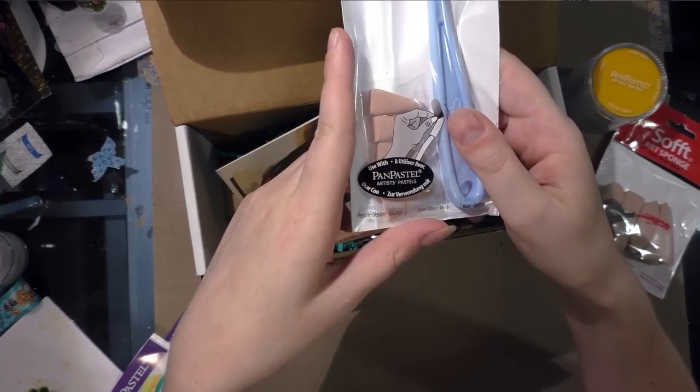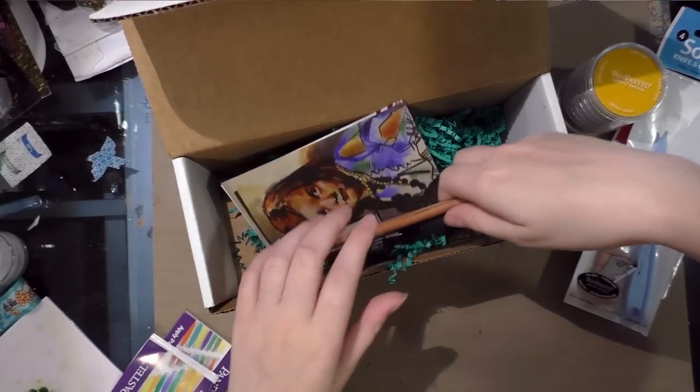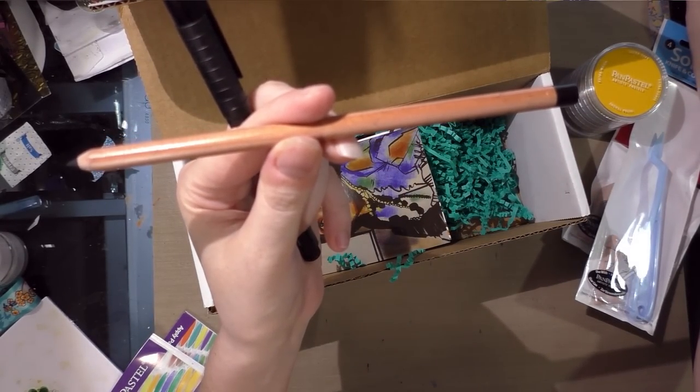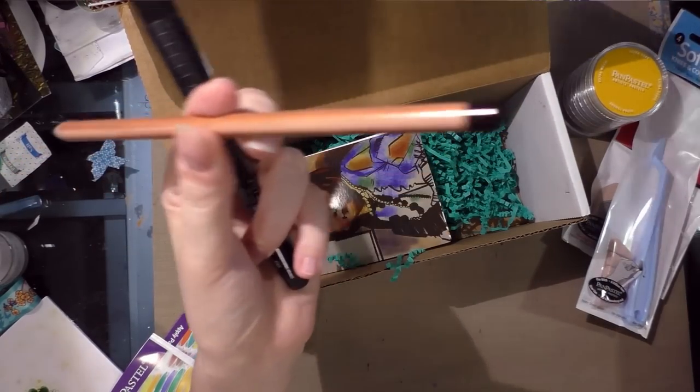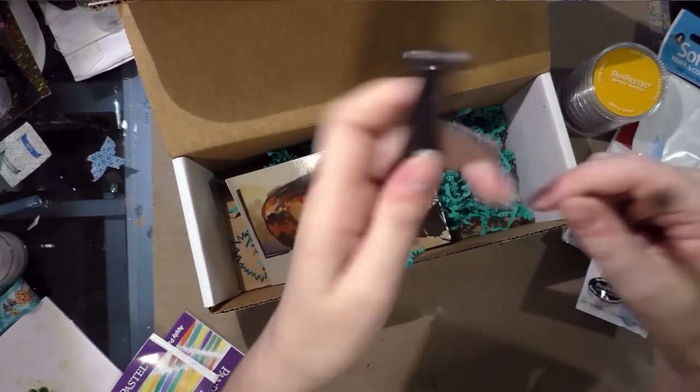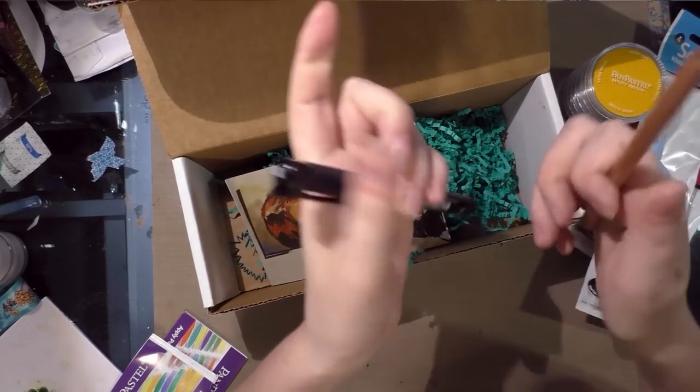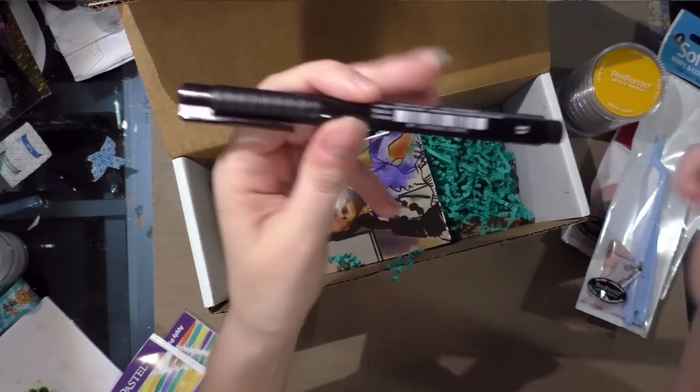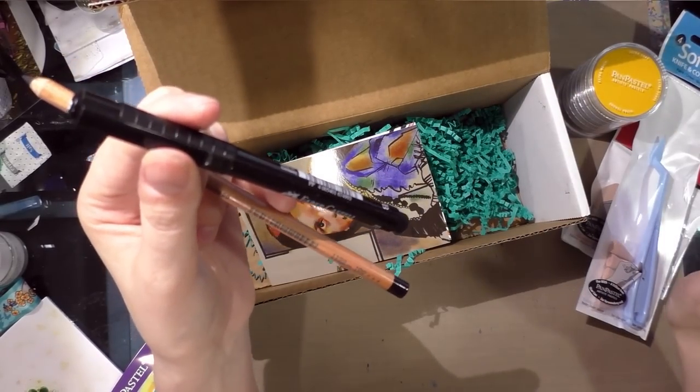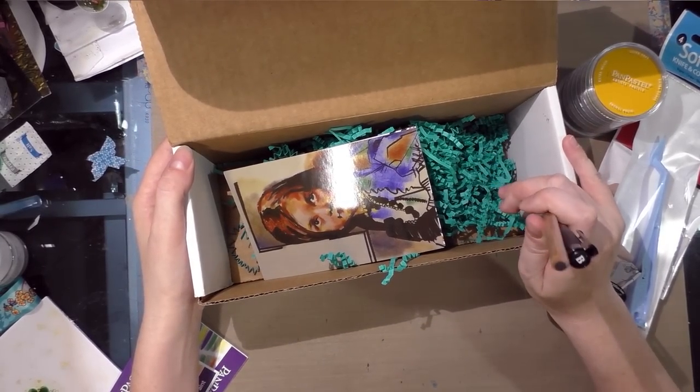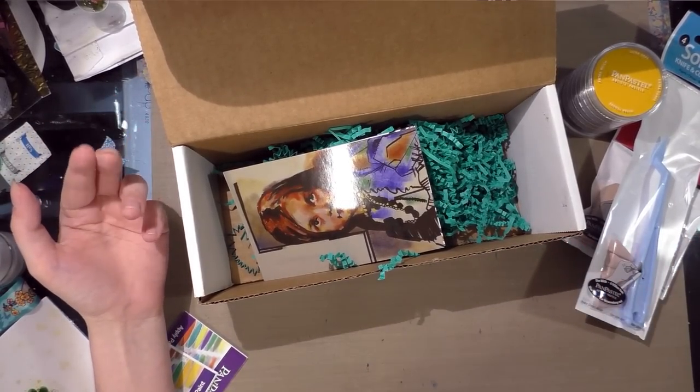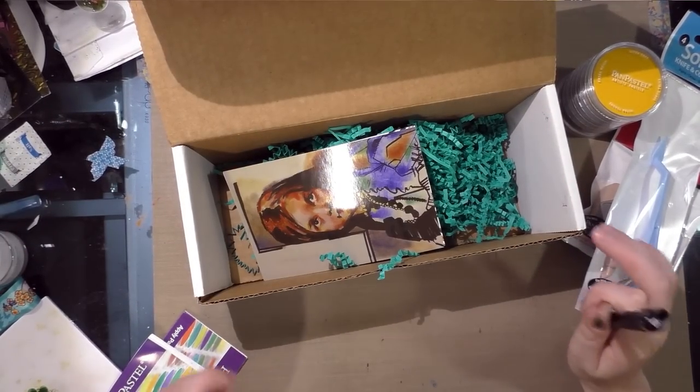The soft art sponge set is $3.19 at Cheap Joe's or $2.61 at Dick Blick. The soft knife set was $7.86 at Dick Blick. The Faber Castell pastel pencil is $1.62 on Dick Blick, and the Pitt pen artist brush pen was $3.60 on Faber Castell or $2.05 on Dick Blick. On the high end, the premium box is worth $37.71.